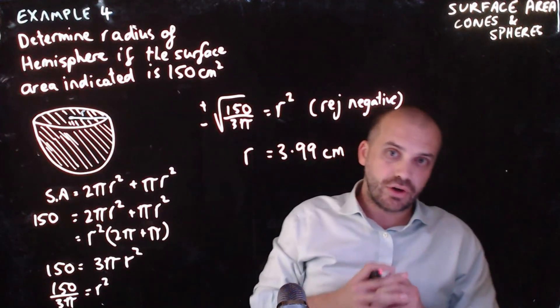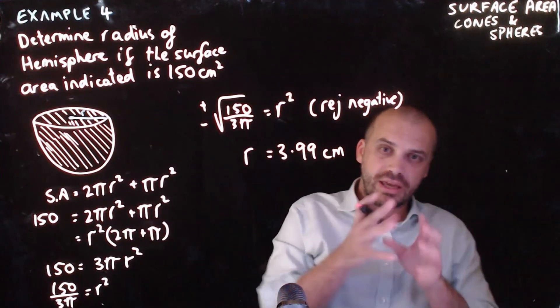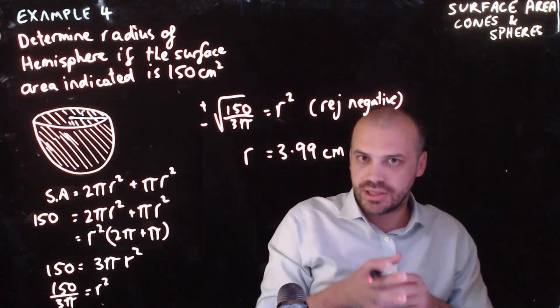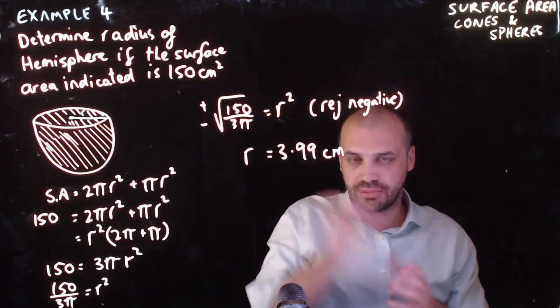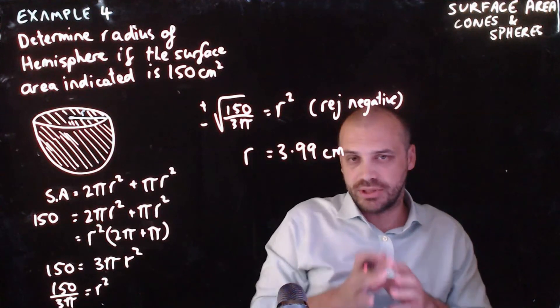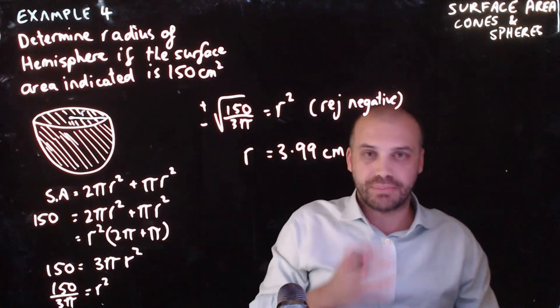All right. That's surface area of cones and spheres. Even though I've given you two formulas here, it's important that you continue engaging your brain and altering those formulas depending on what the shape actually is.